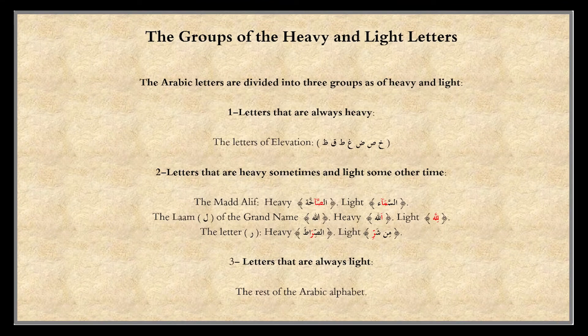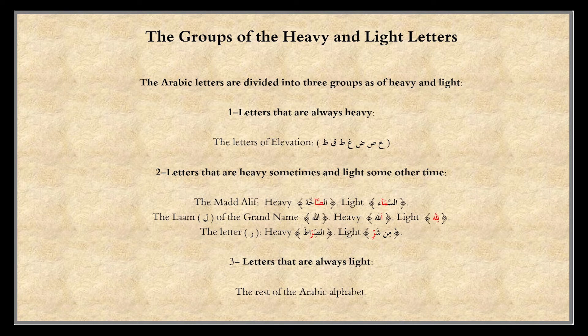Now, the groups of the Arabic letters — heavy and light. The Arabic letters are divided into three groups. One: letters that are always heavy, called the letters of elevation — Kha, Saad, Dad, Ghayn, Ta, Qaf, Dha. These letters are combined in one sentence: Khussa Baghtin Qivh. That is what scholars do — they combine everything so people can memorize it easily. These are the letters which are always heavy.